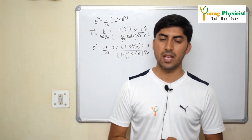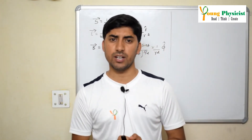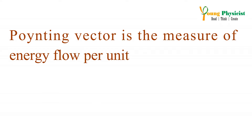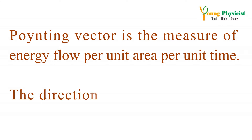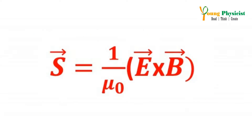Before that, we should know what the Poynting vector is. The Poynting vector is a measure of the energy being carried by the electromagnetic radiation per unit area per unit time. The direction of the Poynting vector is in the direction of energy flow, and it's a calculable quantity. It is given by S = (1/μ₀)(E × B).